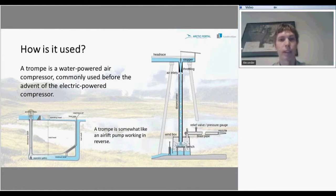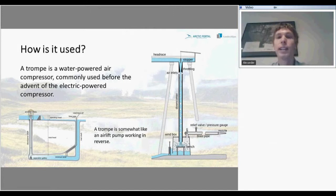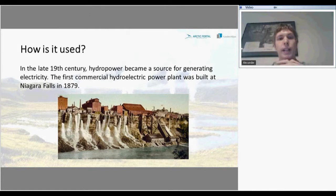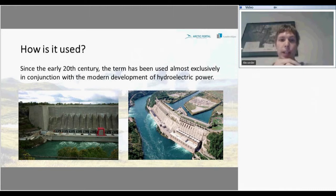It was also used for powering a very interesting device called a tronc — a water-powered air compressor commonly used before the advent of the electric power compressor. It works somewhat like an air pump but in reverse. In the late 19th century, hydropower became a source for generating electricity, and the first commercial hydroelectric power plant was built at Niagara Falls in 1879. Since the early 20th century, the term hydropower has been mostly used in conjunction with the modern development of hydroelectric power.